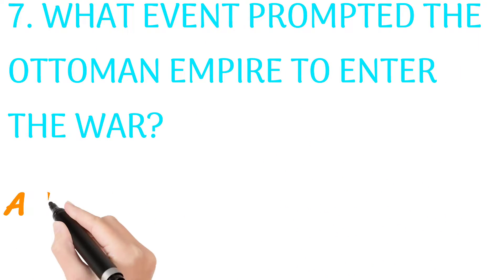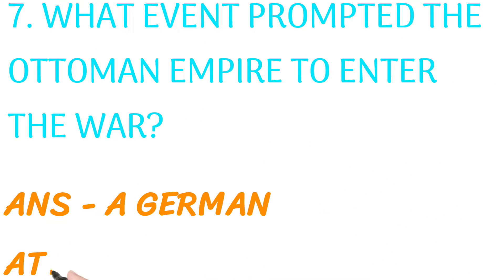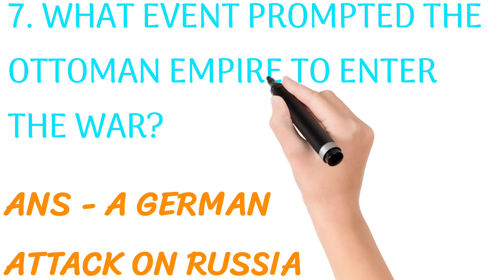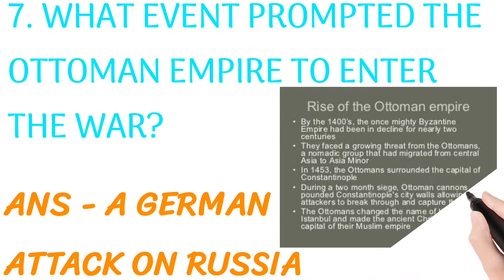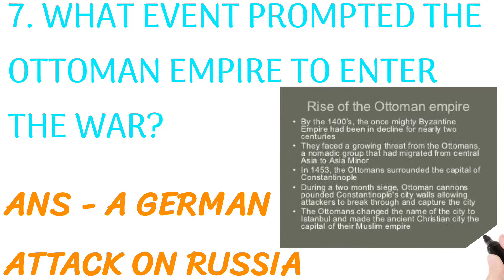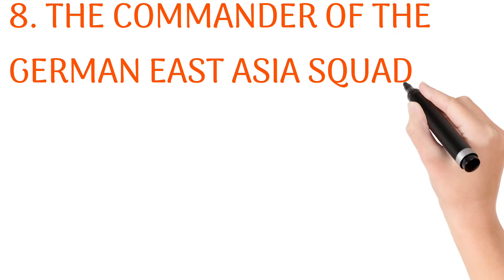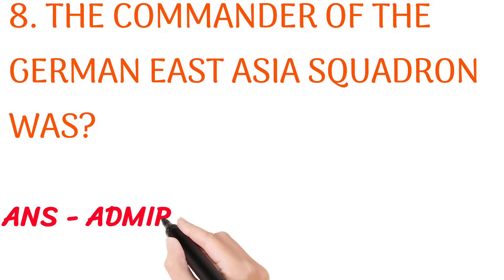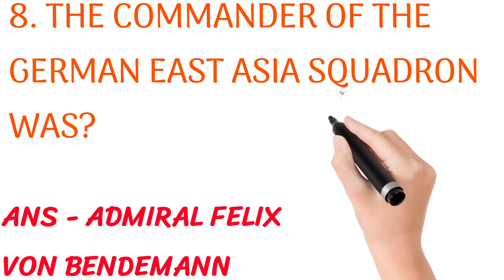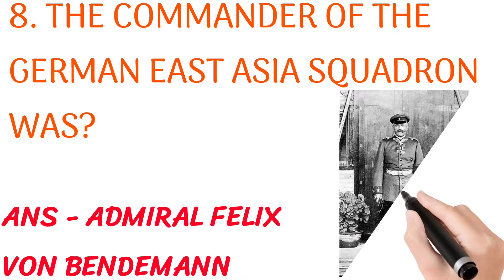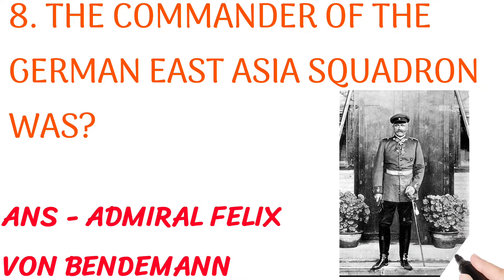What event prompted the Ottoman Empire to enter the war? Answer: A German attack on Russia. The commander of the German East Asia Squadron was — answer: Admiral Felix von Spee.